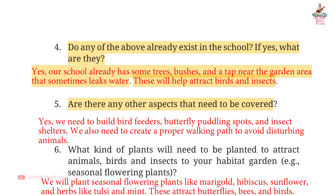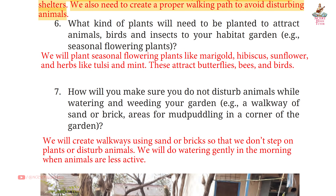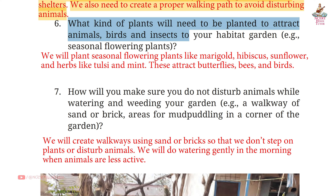Question 5: Are there any other aspects that need to be covered? Answer: Yes, we need to build bird feeders, butterfly puddling spots and insect shelters. We also need to create a proper walking path to avoid disturbing animals. Question 6: What kind of plants will need to be planted to attract animals, birds and insects?